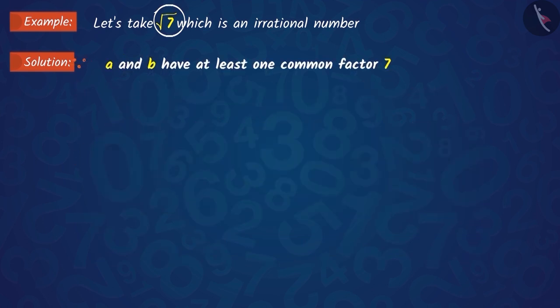Therefore, we have proven that √7 is an irrational number because we found a common factor other than 1 in a and b.